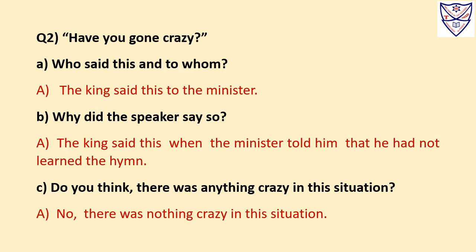Question number 2. 'Have you gone crazy?' Who said this and to whom? Answer: The king said this to the minister. B. Why did the speaker say so? Answer: The king said this when the minister told him that he had not learned the hymn.